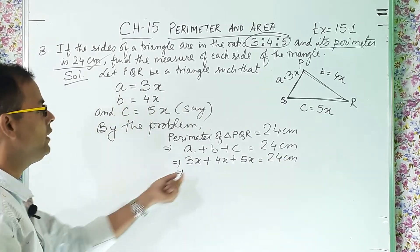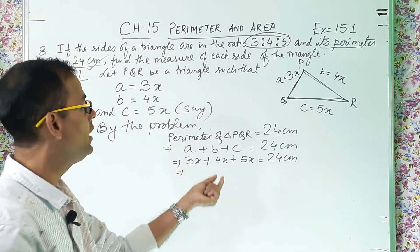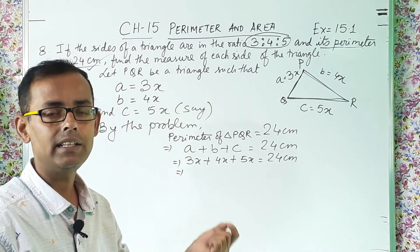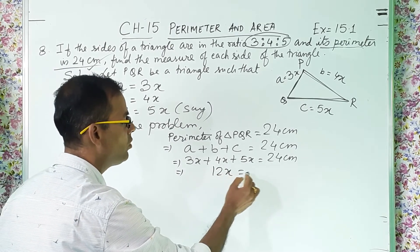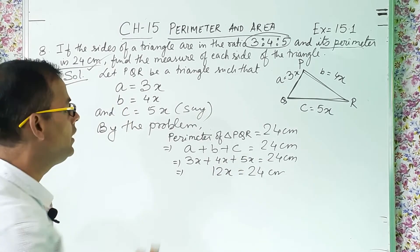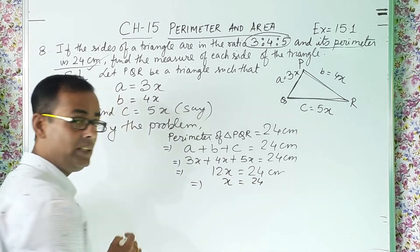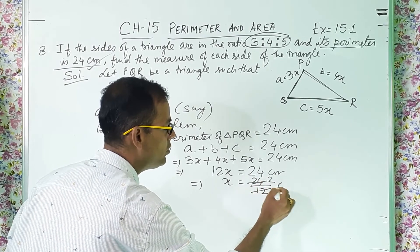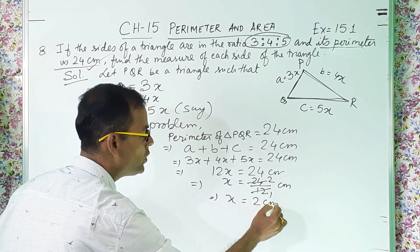Now 3x plus 4x. That means 3 plus 4, 7x. Then 7x plus 5x, 7 plus 5, 12. So 12x equal to 24 centimeter. Clear? Now after that only x. So 24, this is 12 into. Into will become divide. So 12 one the 12, 12 two the 24. So what I get? x value is how much? 2 centimeter. So we got the value of x.